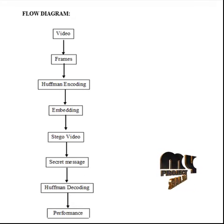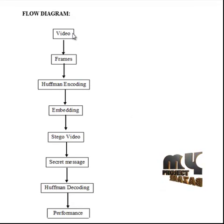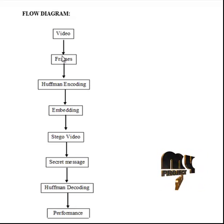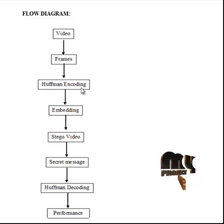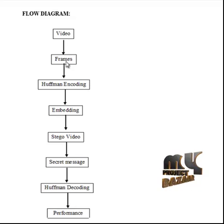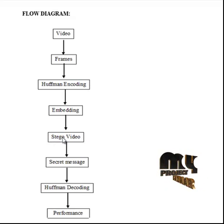Let us see the flow of the process. First, the input video is loaded and converted into frames. Then the encryption process is employed based on codeword substitution. After that, Huffman encoding is employed, which is used for embedding the secret information inside the bits. As a result of these processes, the secret information is placed in the encrypted video frames, producing the resulting stego video.